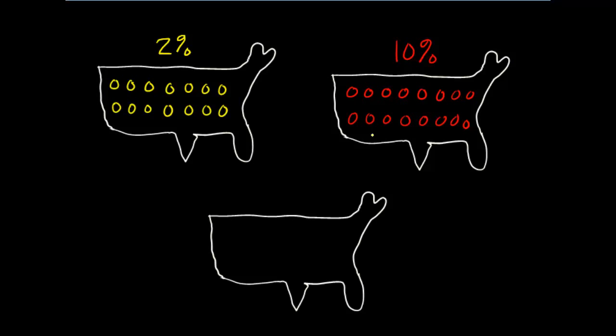If we were using some kind of continuous measure, we would probably use an average or mean value. If the mean value of the outcome variable — for example, some measure of lung function — was different when people weren't exposed compared to when they were exposed, then we would say that the exposure is a cause of the outcome.